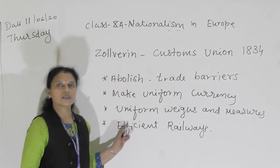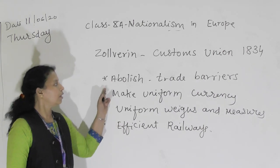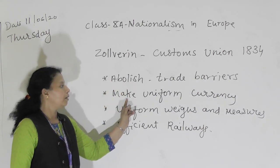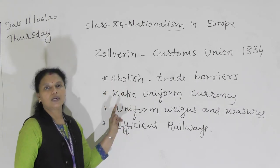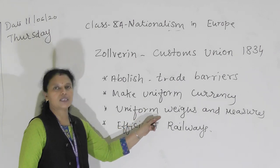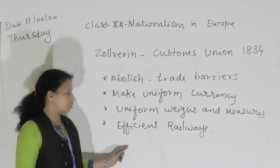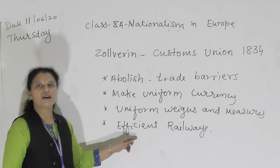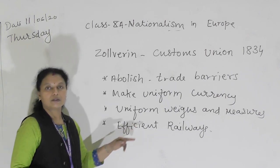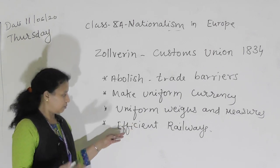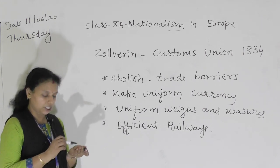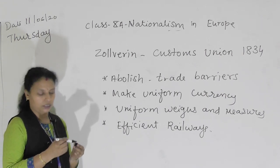Zollverein was a customs union. Its main aim was to abolish the trade barrier, make a uniform currency, abolish trade restrictions, maintain uniform weights and measures, and introduce an efficient railway. This efficient railway, in turn, helped in boosting nation-state formation.